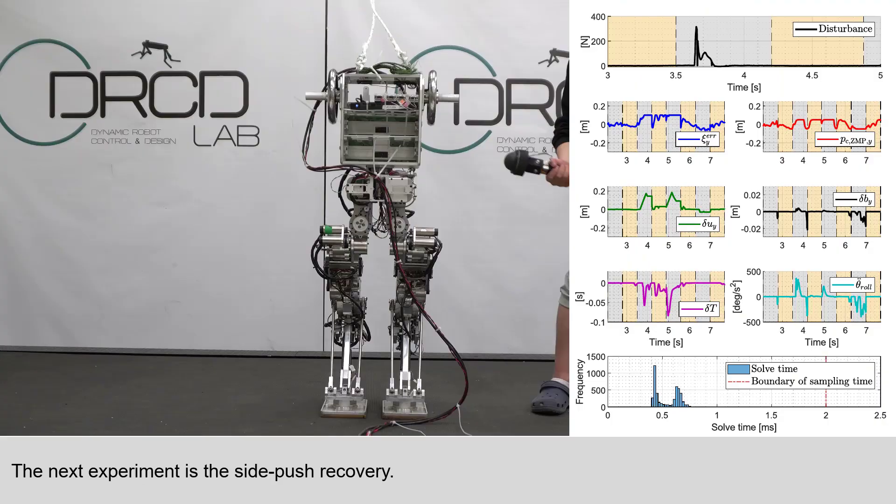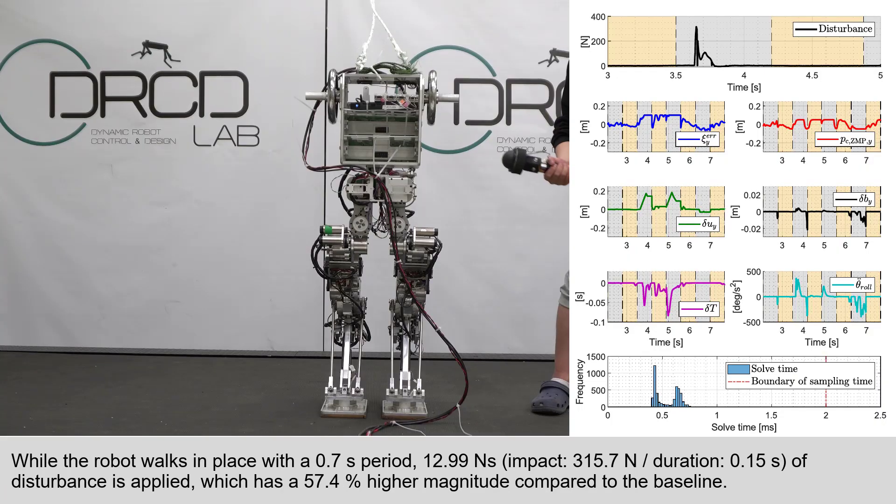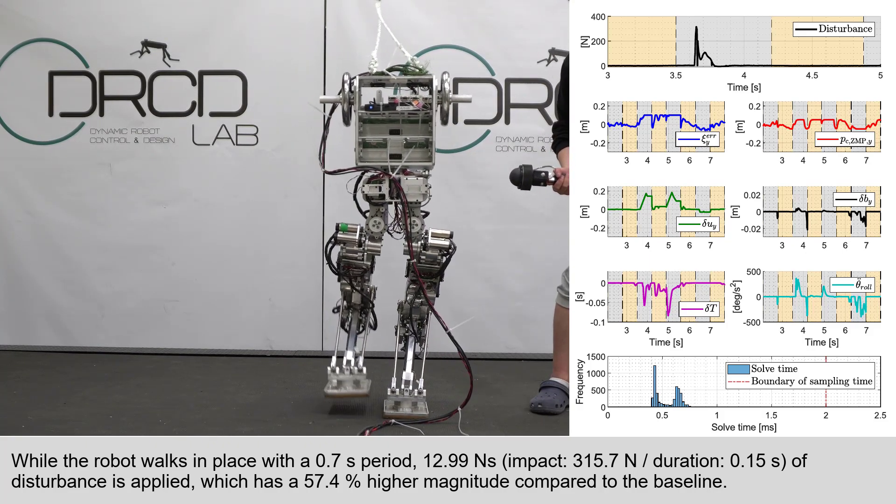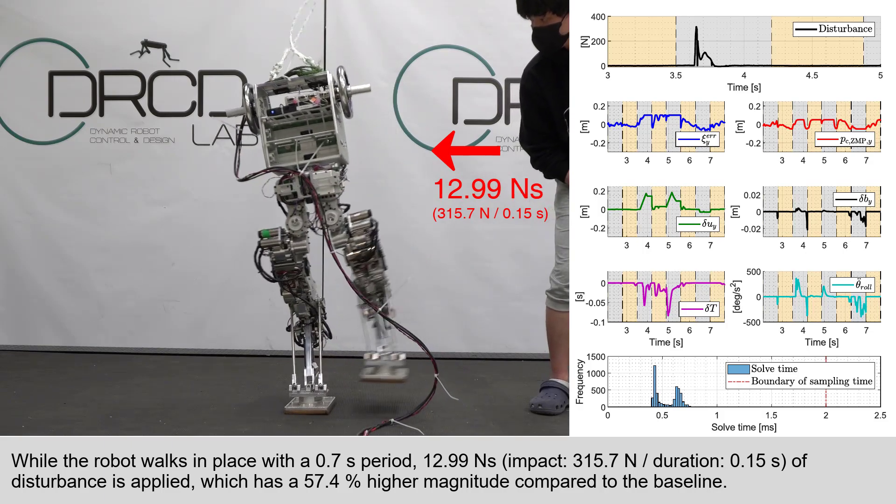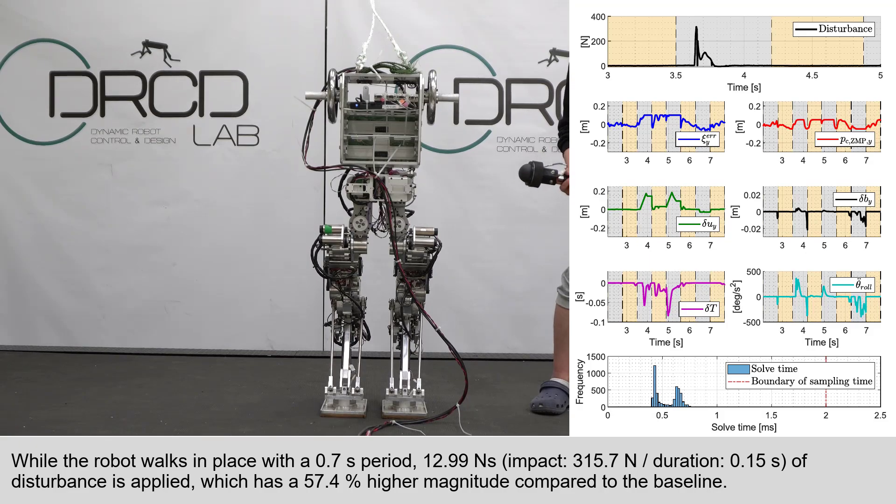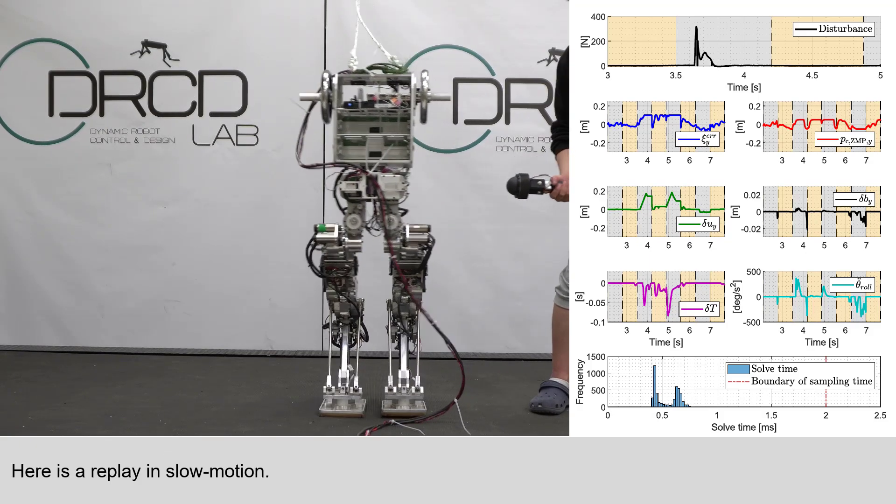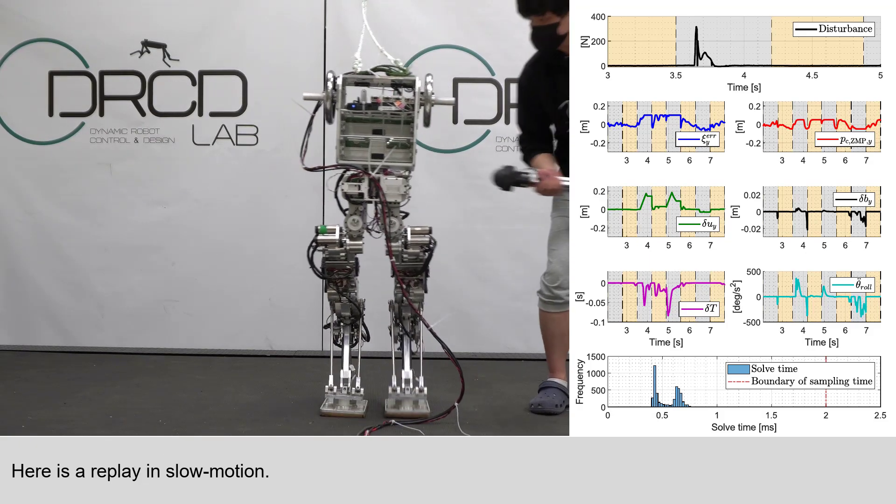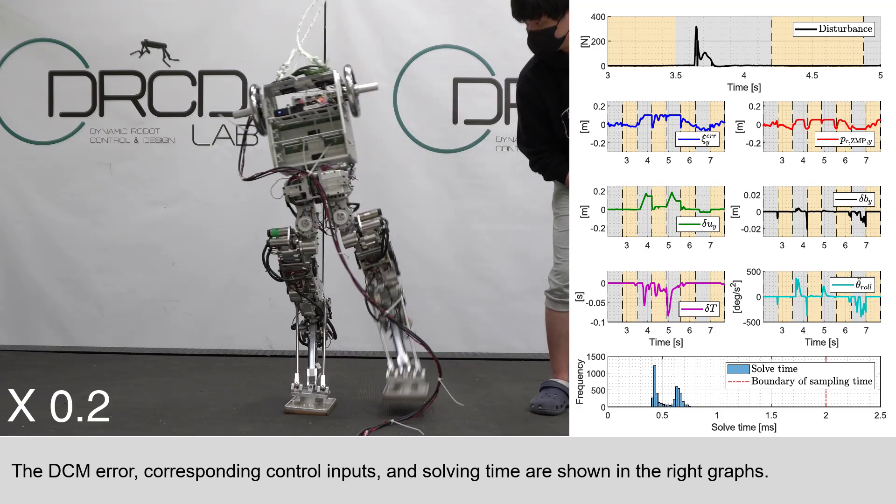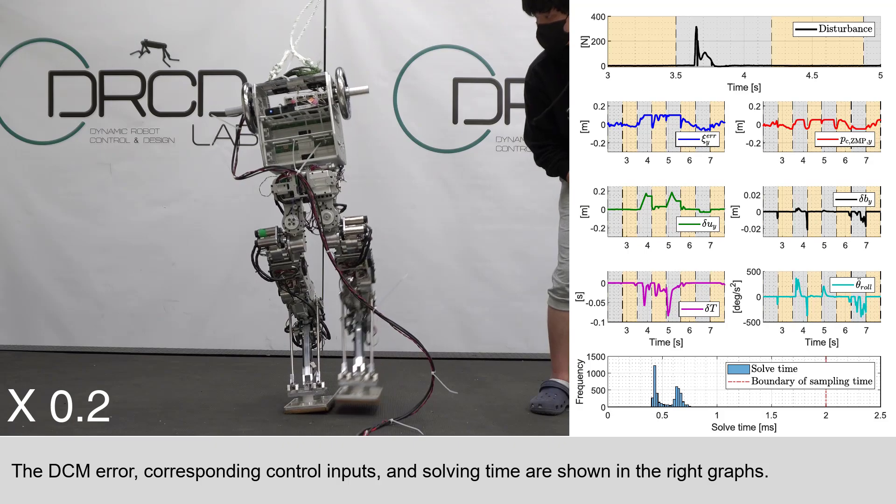The next experiment is the side push recovery. While the robot walks in place with a 0.7 second period, 12.99 Ns of disturbance is applied, which has a 57.4% higher magnitude compared to the baseline. Here is a replay in slow motion. The DCM error, corresponding control inputs, and solving time are shown in the right graphs.